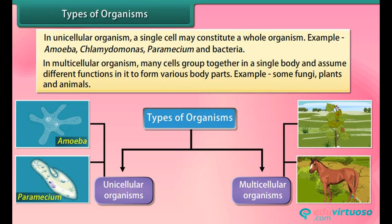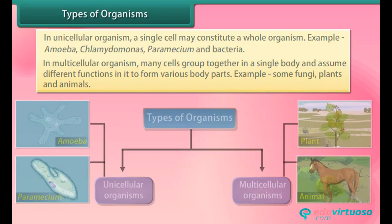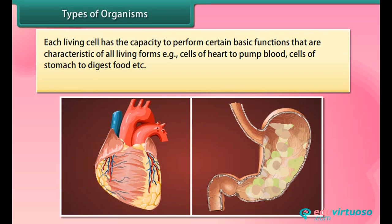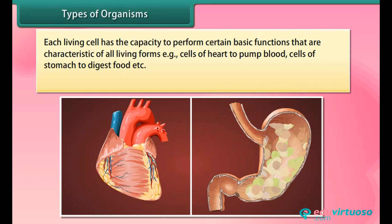In multicellular organisms, many cells group together in a single body and assume different functions in it to form various body parts. Examples include some fungi, plants, and animals.